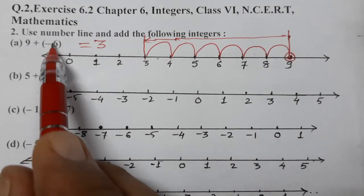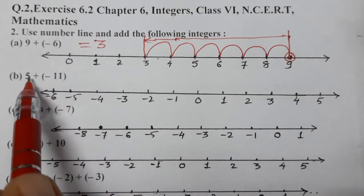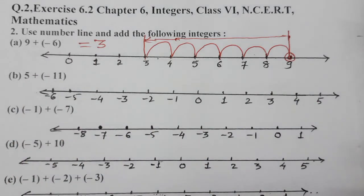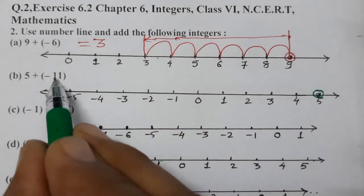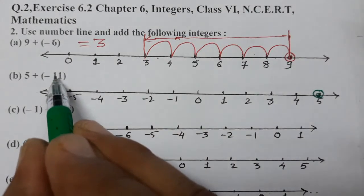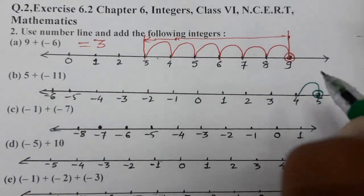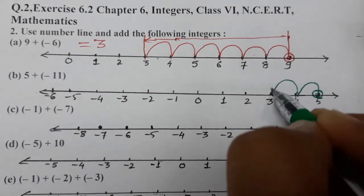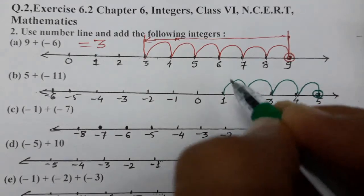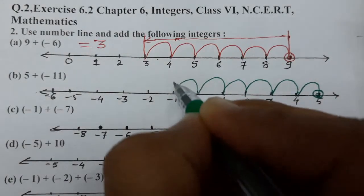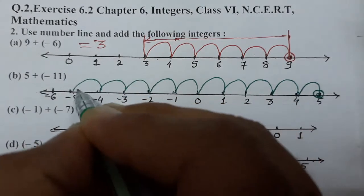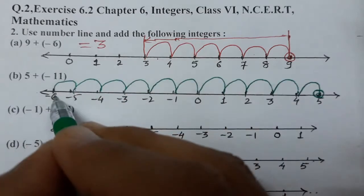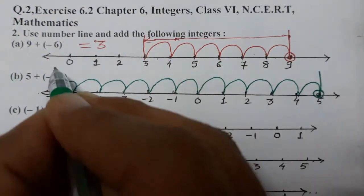Now 5 + (-11). We start with 5 on the number line. Minus eleven shows we have to move eleven points towards the left — one, two, three, four, five, six, seven, eight, nine, ten, and eleven — and we reach at minus 6. So the answer is minus 6.